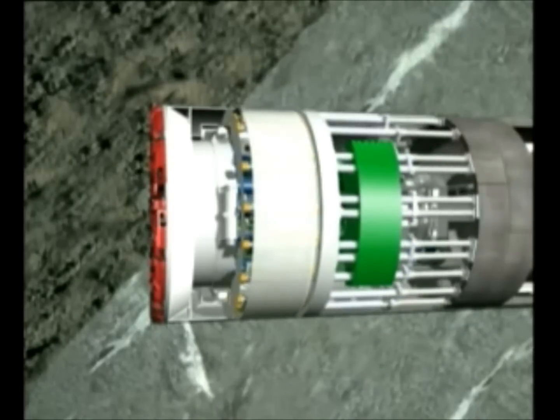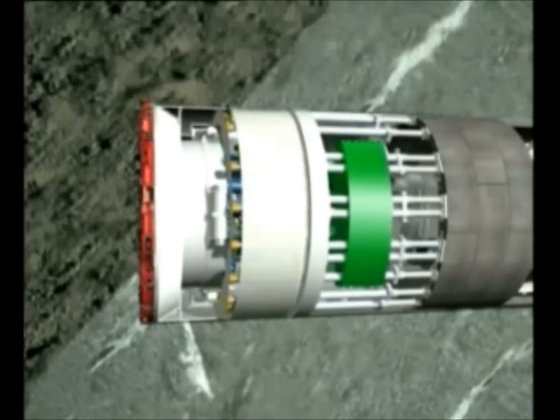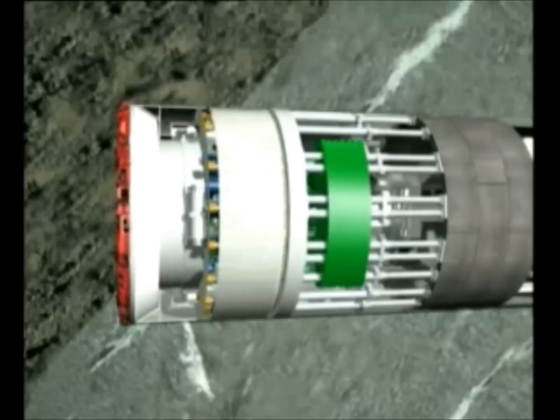If the double shield encounters a section with fault zones, the telescopic front shield is retracted. The entire boring machine is pushed forward only by the auxiliary thrust cylinders, which are pushing against the tunnel lining.